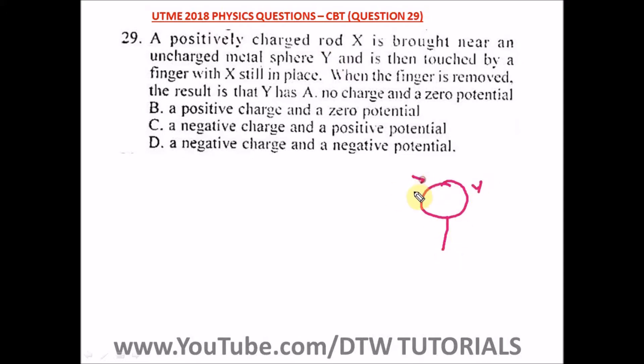A rod which is positively charged is brought close to it, positively charged, and it's then touched by a finger with X still in place. So this is Y, this is X.